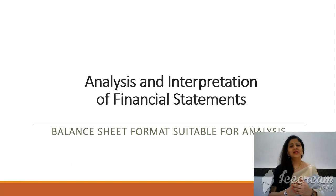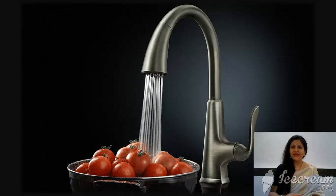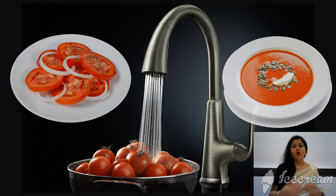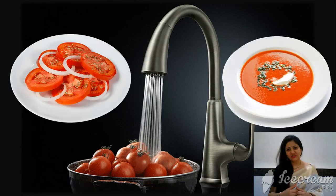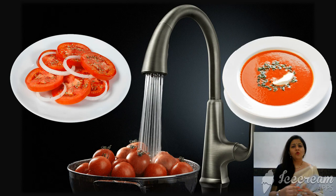Why this? Let me give you a simple example — tomatoes. We wash the tomatoes first to bring them into a consumable condition. Only then we can either make a salad or a soup out of it. Similarly, before we get into the analysis, we have to first convert the Balance Sheet into a vertical format suitable for analysis. We can then pick up any tools — comparative, common size, trend, or ratios.